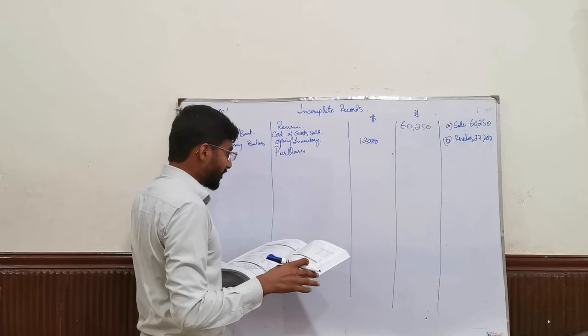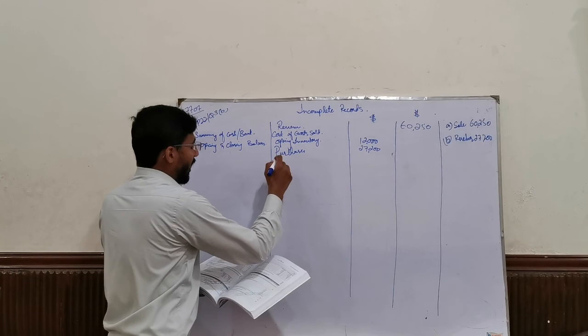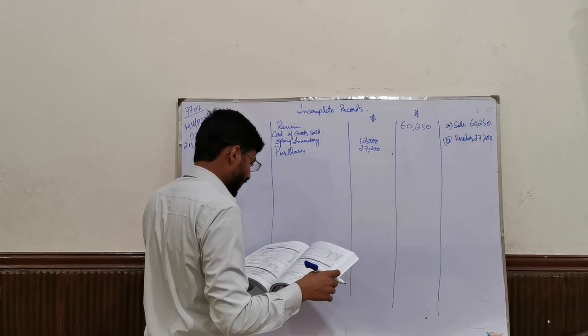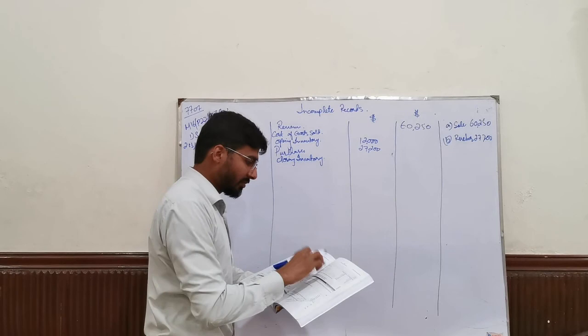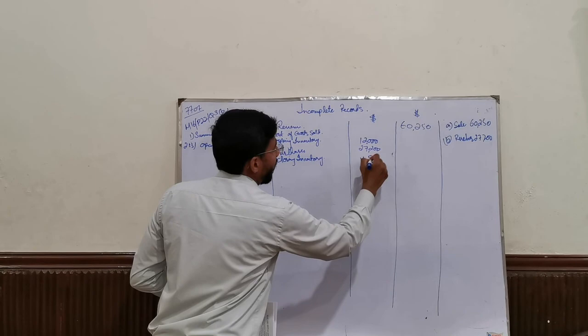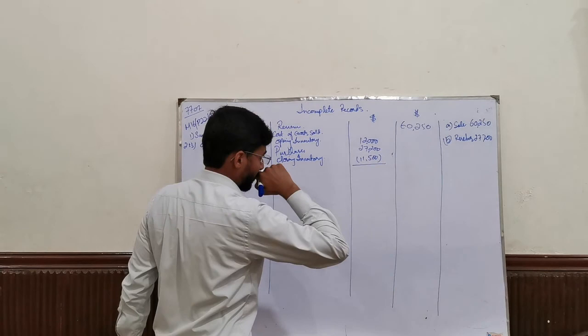Then I have purchases and my purchases are 27,200. There is no purchase return — it wasn't given in the question. Then I have closing inventory, and looking at the figures given, closing inventory is 11,500. The total cost of sales would be 27,700.